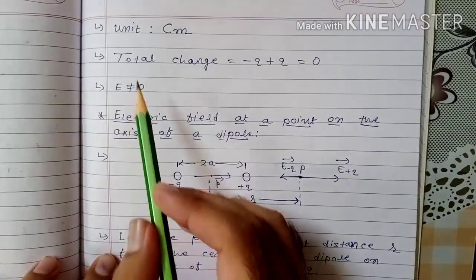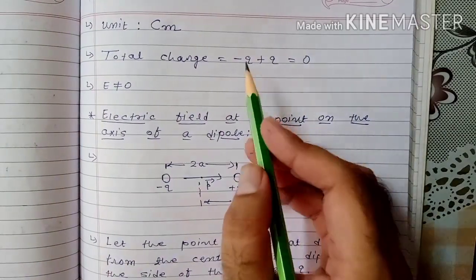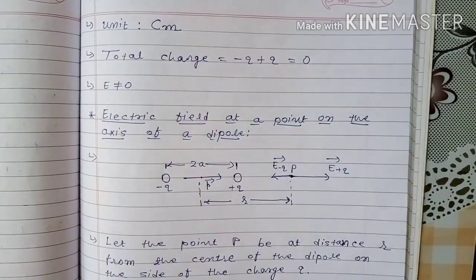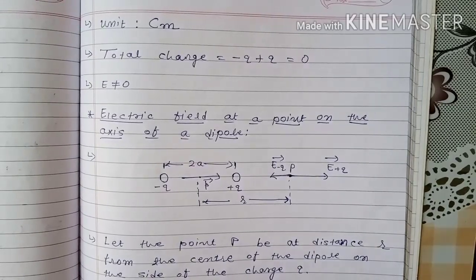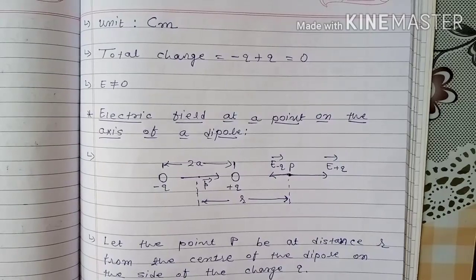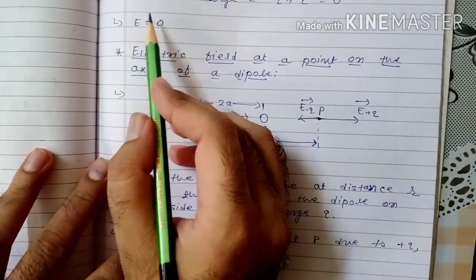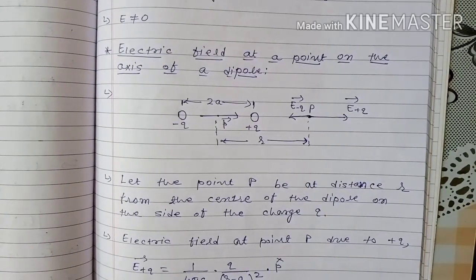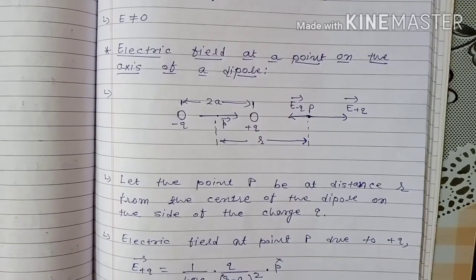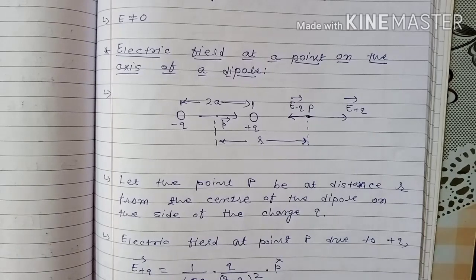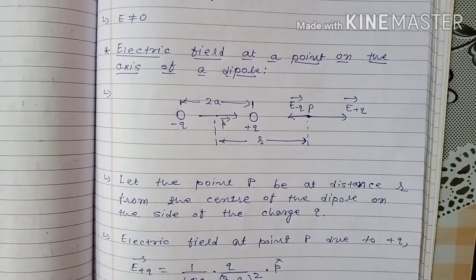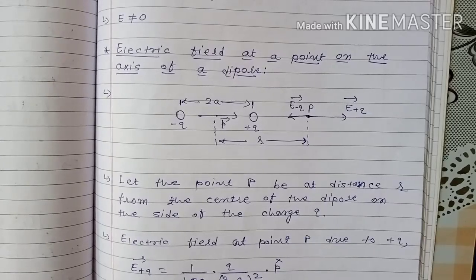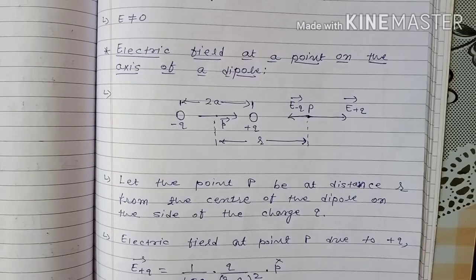If you consider the total charge, then total charge of the electric dipole is minus q plus q, which equals 0 — so the net charge of the system is 0. But that does not mean the electric field of the dipole is 0. The electric field surrounding the dipole will never be 0 at any point, because these two charges are separated by a finite distance — they are not at the same point. Therefore, you will get some electric field surrounding the dipole.